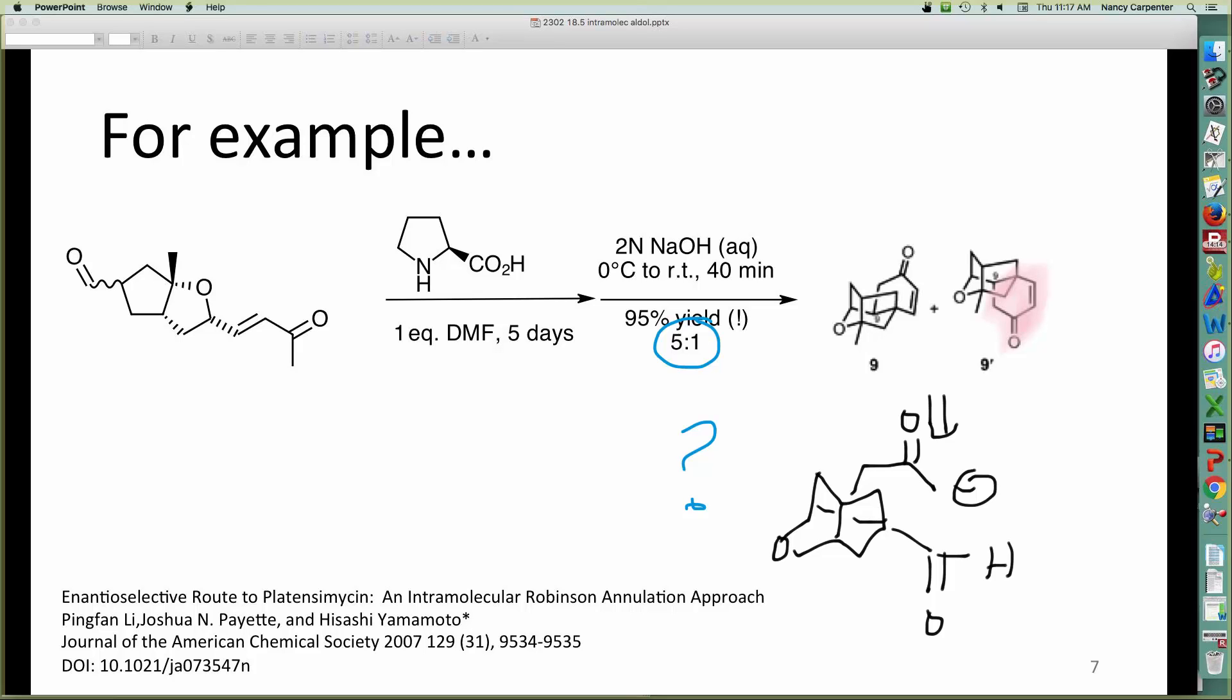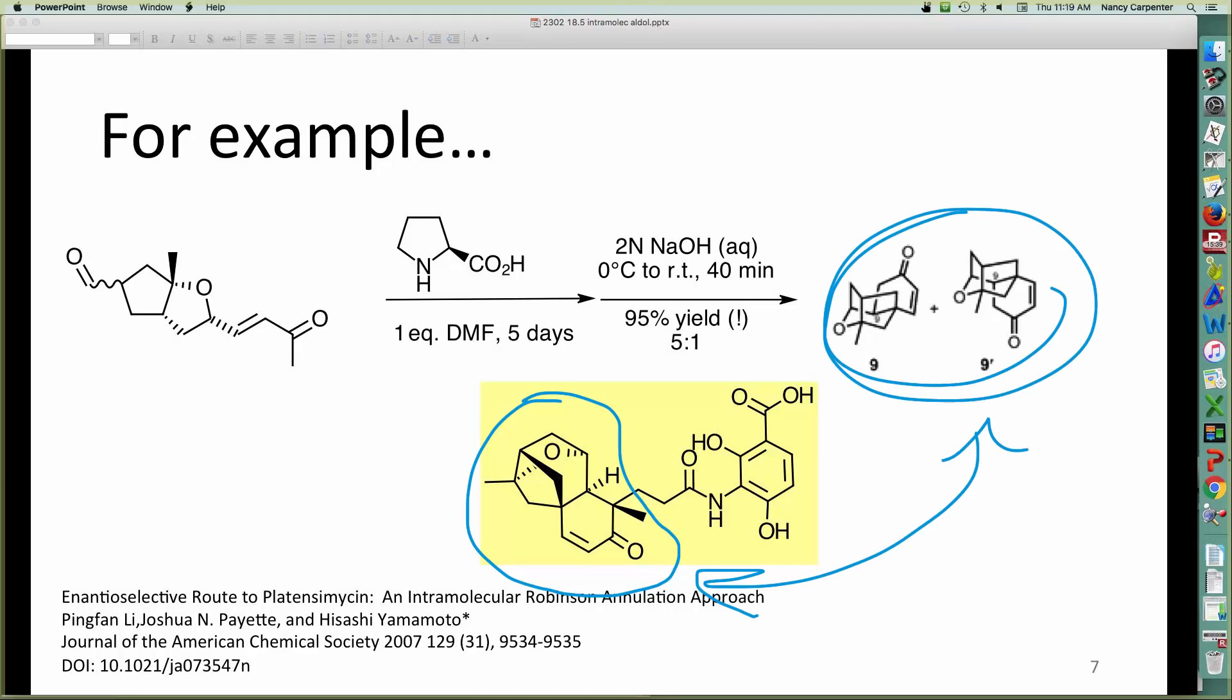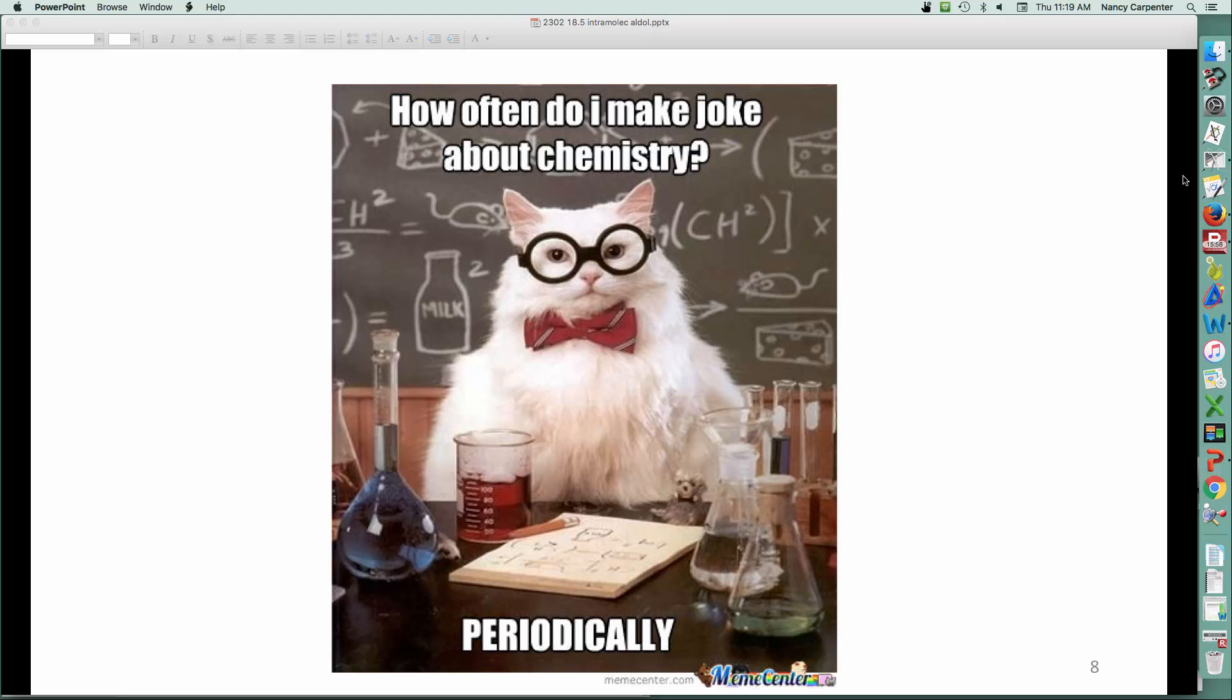All right. As promised, I broke this into two, I hope, smaller mini lectures. So, I'll wrap this one up quickly with a stupid. Oh, well. Ha! It's not wrapped up quite quickly. This is the, in the yellow box, this is the ultimate target that they are trying to make. And, I think what you can see here is that, basically, this is the part that corresponds to our intramolecular Michael Aldol Robinson annulation. Okay. So, yes. I'm going to wrap it up with a stupid meme. I'm sure you've seen this before, but it's so appropriate. I only make jokes about chemistry periodically. All right. One last mini lecture, and then we'll see you in class.